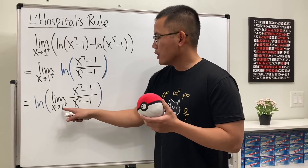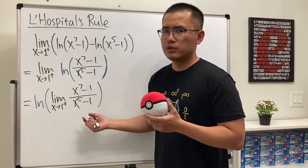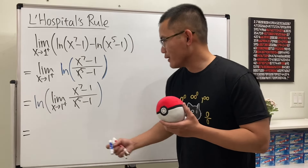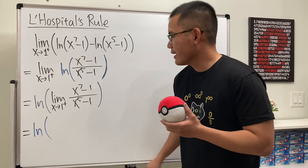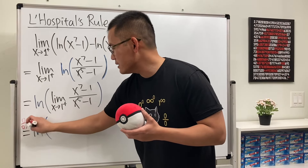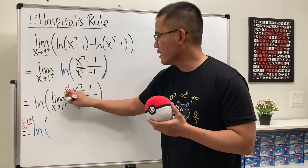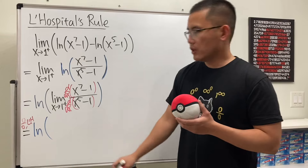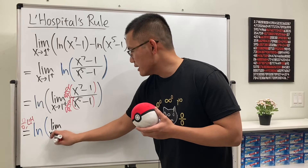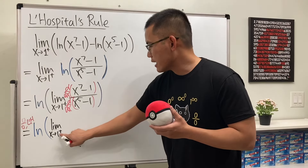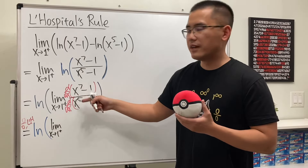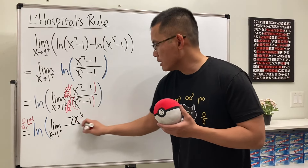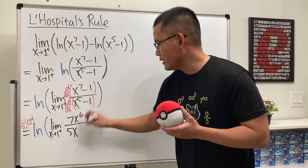Now take a look right here. When we plug 1 into the numerator and denominator, we get 0 over 0. So we can use L'Hôpital's rule. However, we still have the natural log on the outside, so let's keep writing the natural log. This is the 0 over 0 case — L'Hôpital's rule. Differentiate the top and differentiate the bottom. We get the limit as x approaching 1 plus, and the derivative of x to the 7th is 7x to the 6th, and the derivative of x to the 5th minus 1 gives us 5x to the 4th power.